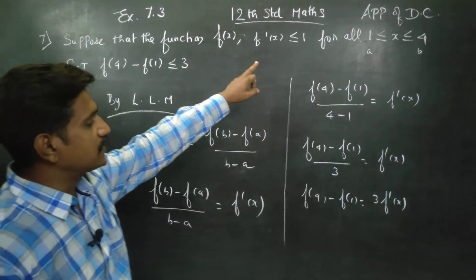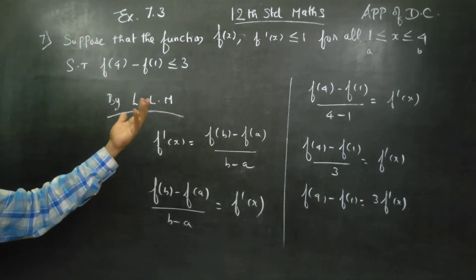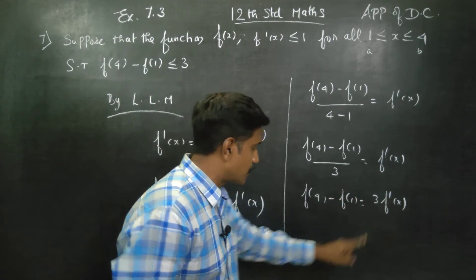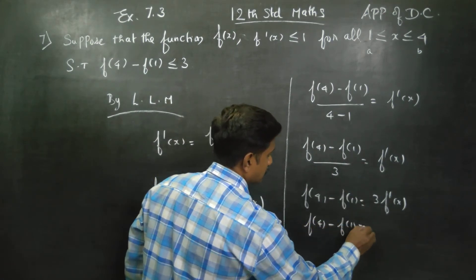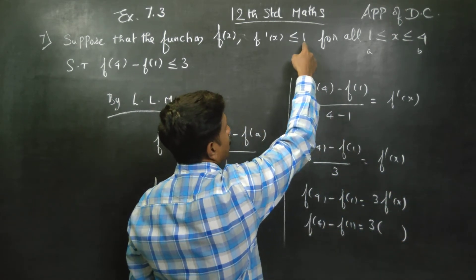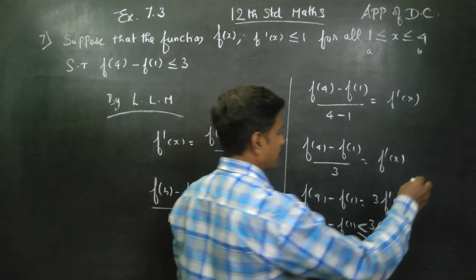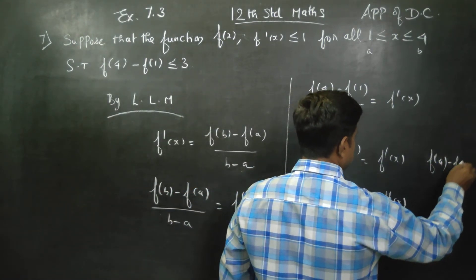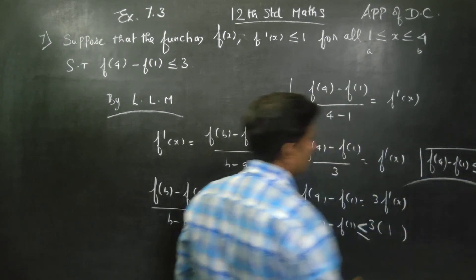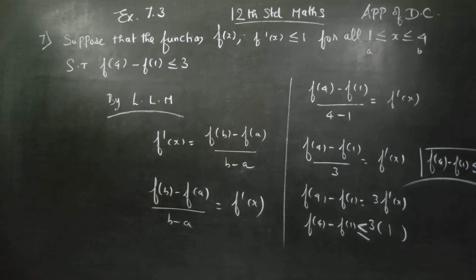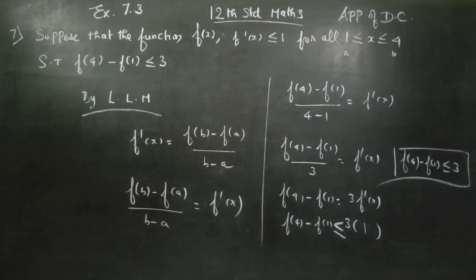Now, the value of f'(x) is given as less than or equal to 1. So f(4) minus f(1) is equal to 3 times f'(x). Since f'(x) is less than or equal to 1, substituting, the equal to symbol changes to less than or equal to. Therefore, the final answer is: f(4) minus f(1) is less than or equal to 3. Hence proved. Thank you.